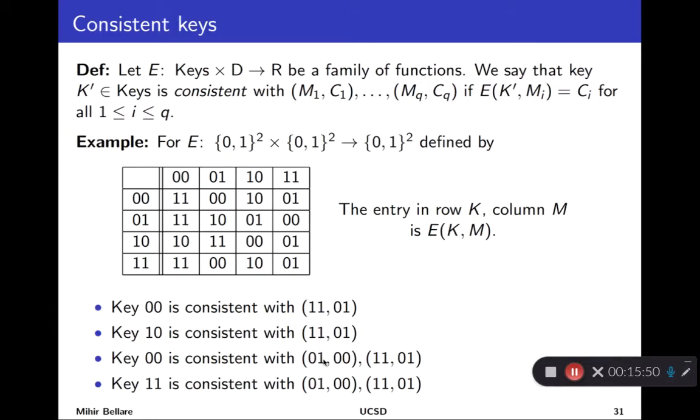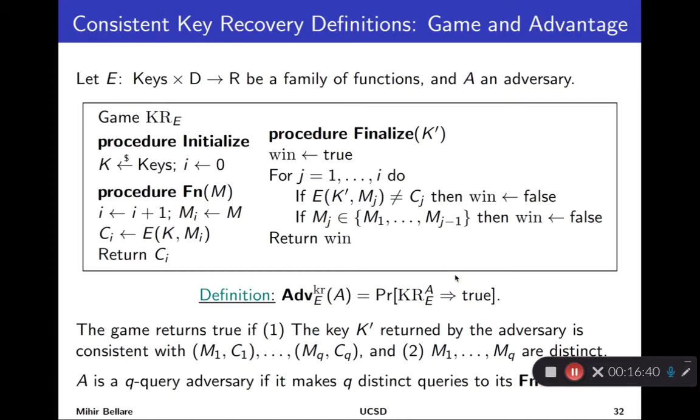Now, let's move to two examples. This is q equals 2. Remember, each example is a pair. So, here's the input of the pair and the output, and then again another input and another output. This key 00 is consistent with that sequence. Why? It maps 01 to 00 as per this. It maps 11 to 01 as per this. So, it's consistent with both. Key 11 is consistent with this pair. Why? It maps 01 to 00 as per this. It maps 11 to 01 as per this. So, we now know what it means for a key to be consistent with some sequence of input and output examples.